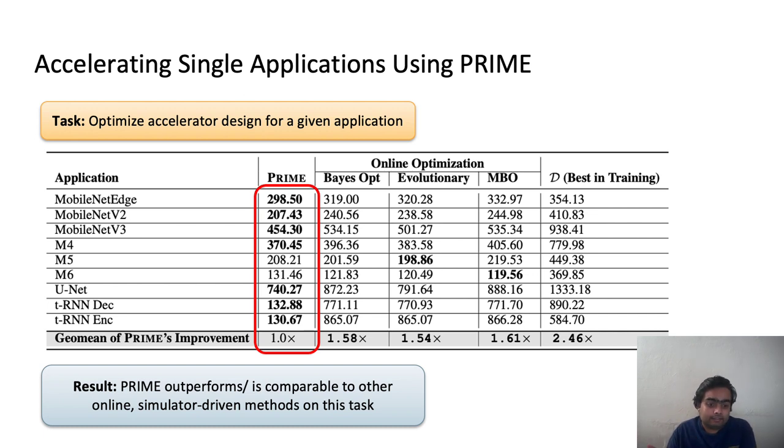And now you might wonder why this is actually the case, because PRIME only has access to the offline dataset and no online interactions. And the reason here is that in the amount of data budget that is given to PRIME and to the evolutionary or online methods, PRIME is much more data efficient in the sense that if you give these online methods many more days to query the simulator and find a better design, they'll find one. But here in this case, we control for the amount of data that is seen by PRIME and equivalently the number of online queries that the online optimization methods can make and find that PRIME is much more data efficient.